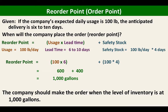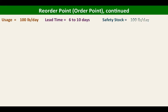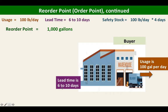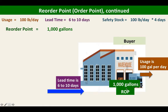It means the company should make the order when the inventory level is at 1,000 gallons. Let us illustrate this. Our reorder point is 1,000 gallons. As the buyer, our usage is 100 gallons per day, and we have a lead time of 6 to 10 days, meaning we can only receive our order after waiting at least 6 days from the date the order was placed, and it can be delayed up to 10 days.